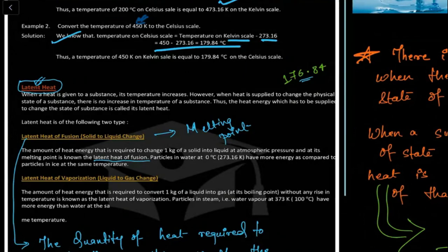There are two kinds of latent heat: latent heat of vaporization and latent heat of fusion. The latent heat of fusion is the amount of heat energy required to change one kilogram of solid to the liquid state at atmospheric pressure and temperature.